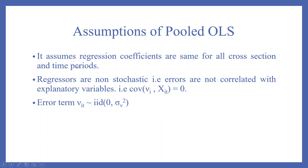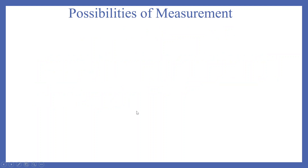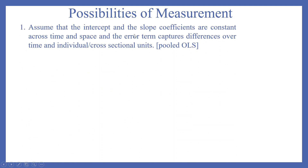Assumptions of pooled OLS: it assumes regression coefficients are the same for all cross-sections and time periods. Regressors are non-stochastic — that is, errors are not correlated with the explanatory variables, meaning the covariance is 0. The error term V_it is independently identically distributed with mean 0 and constant variance sigma-squared-V. It assumes that the intercept and the slope coefficients are constant across time and space, and the error term captures differences over time and individual cross-section units.